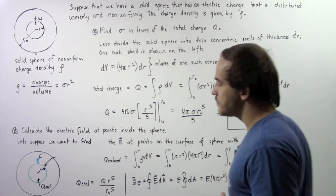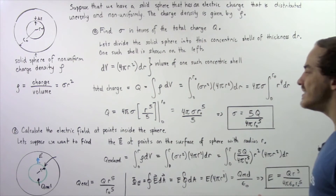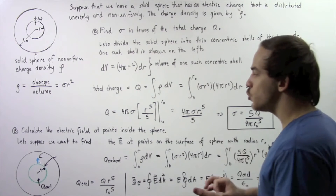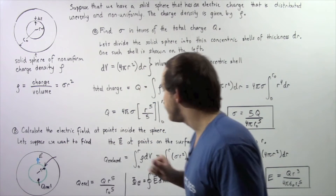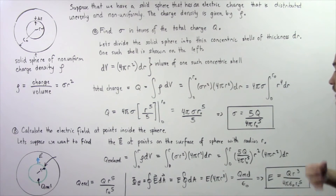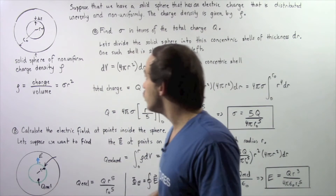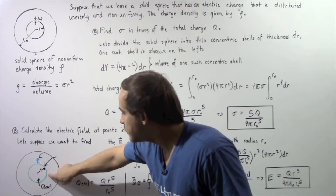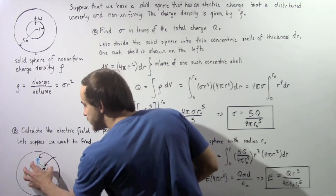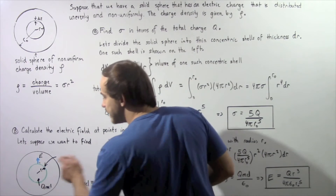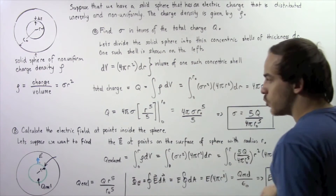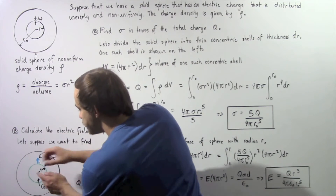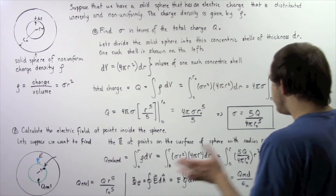In part B, we calculate the electric field at points inside the sphere using Gauss's law. To apply Gauss's law, we must choose a Gaussian surface — a sphere of radius r inside the solid sphere, shown by the green outline. The solid sphere has radius r-naught. First, we calculate the charge enclosed within this green spherical region, which is essential for finding the electric field.